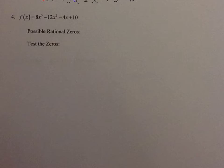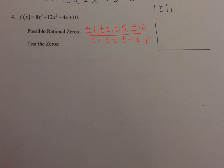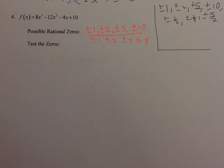Now f of x equals 8x cubed minus 12x squared minus 4x plus 10. My constant term is 10, with factors plus or minus 1, 2, 5, and 10. My leading coefficient is 8, with factors plus or minus 1, 2, 4, and 8. This gives me 20 possible rational zeros: plus or minus 1, 2, 5, 10, 1 half, 1 fourth, 5 halves, 5 fourths, 5 eighths, and 1 eighth.